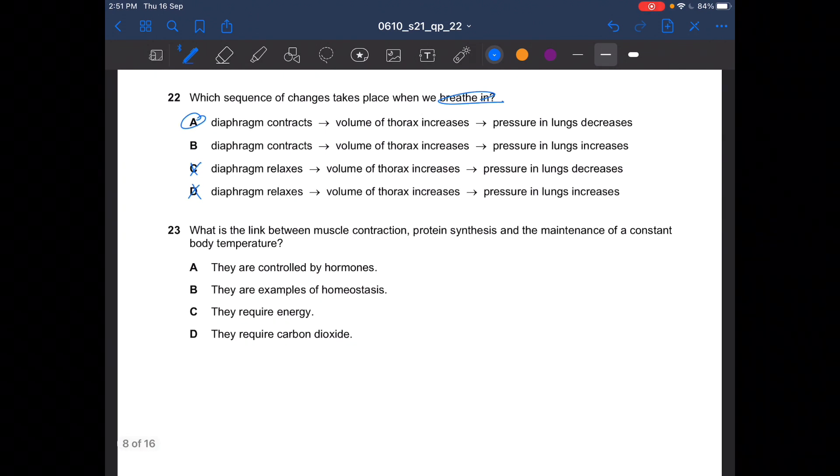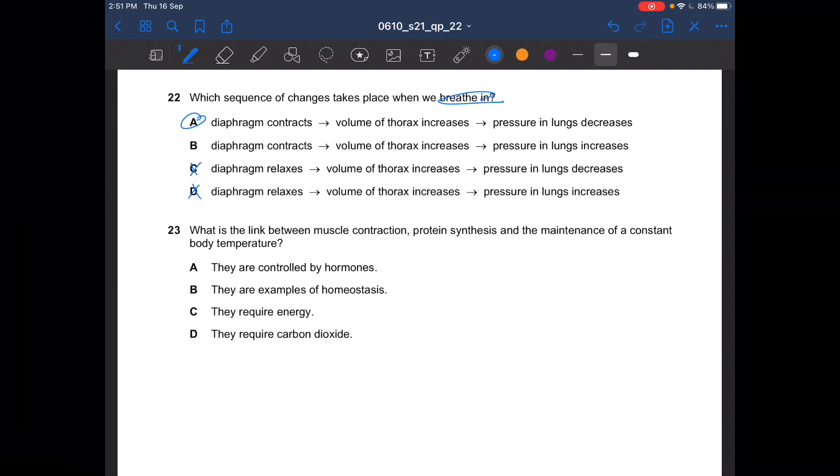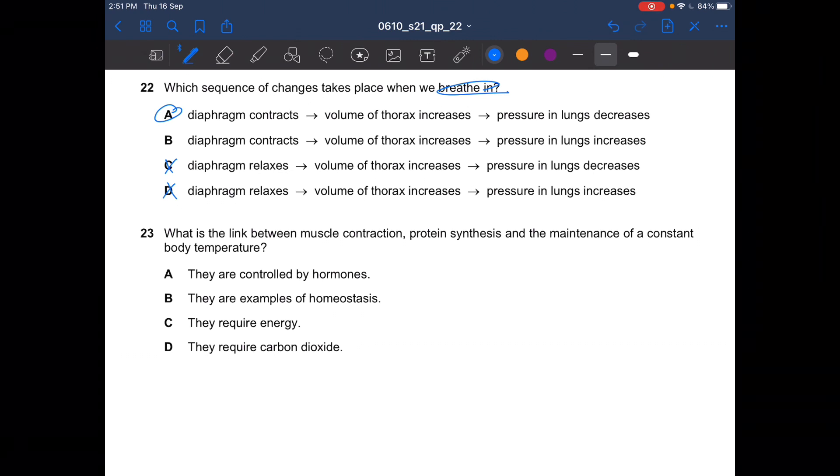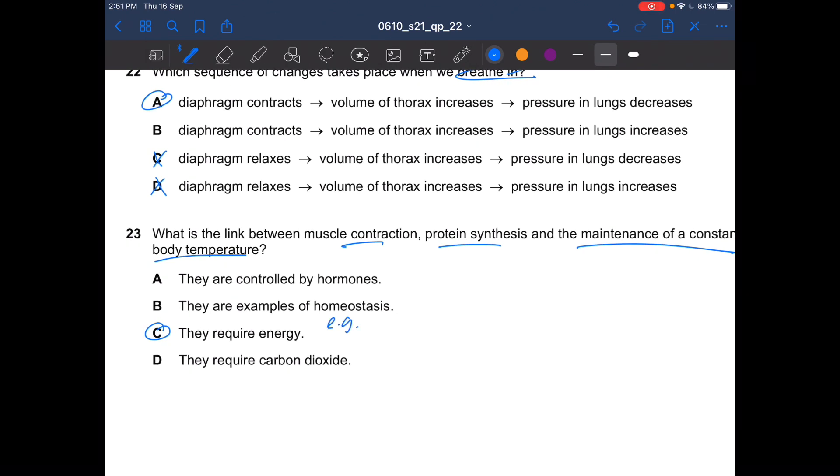Next question. What is the link between muscle contraction, protein synthesis, and the maintenance of a constant body temperature? These require energy, so the answer is C. Another example of this is cell division, growth, active transport, and the passage of nerve impulses.